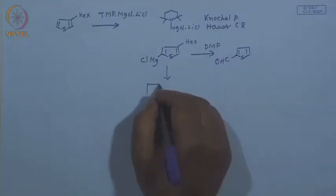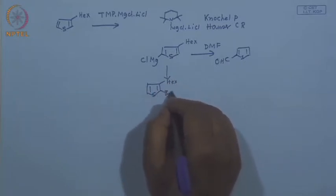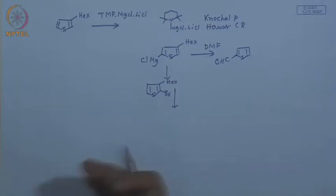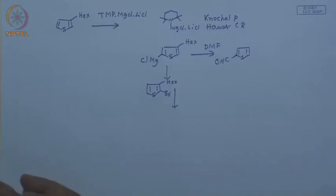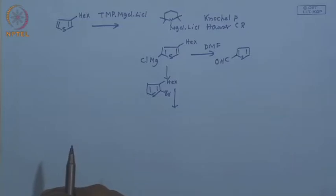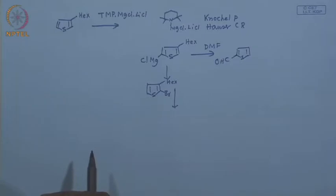Now, how to make this oligothiophene? If you take one thiophene and couple it with another, that is what we call coupling — cross coupling. You have two different heterocyclic moieties and you just couple them. In this case the metal is magnesium, so you have to remember which conditions are required for magnesium coupling. The Kumada coupling requires iron, but also any kind of coupling with organomagnesium reagents is known as Kumada coupling.